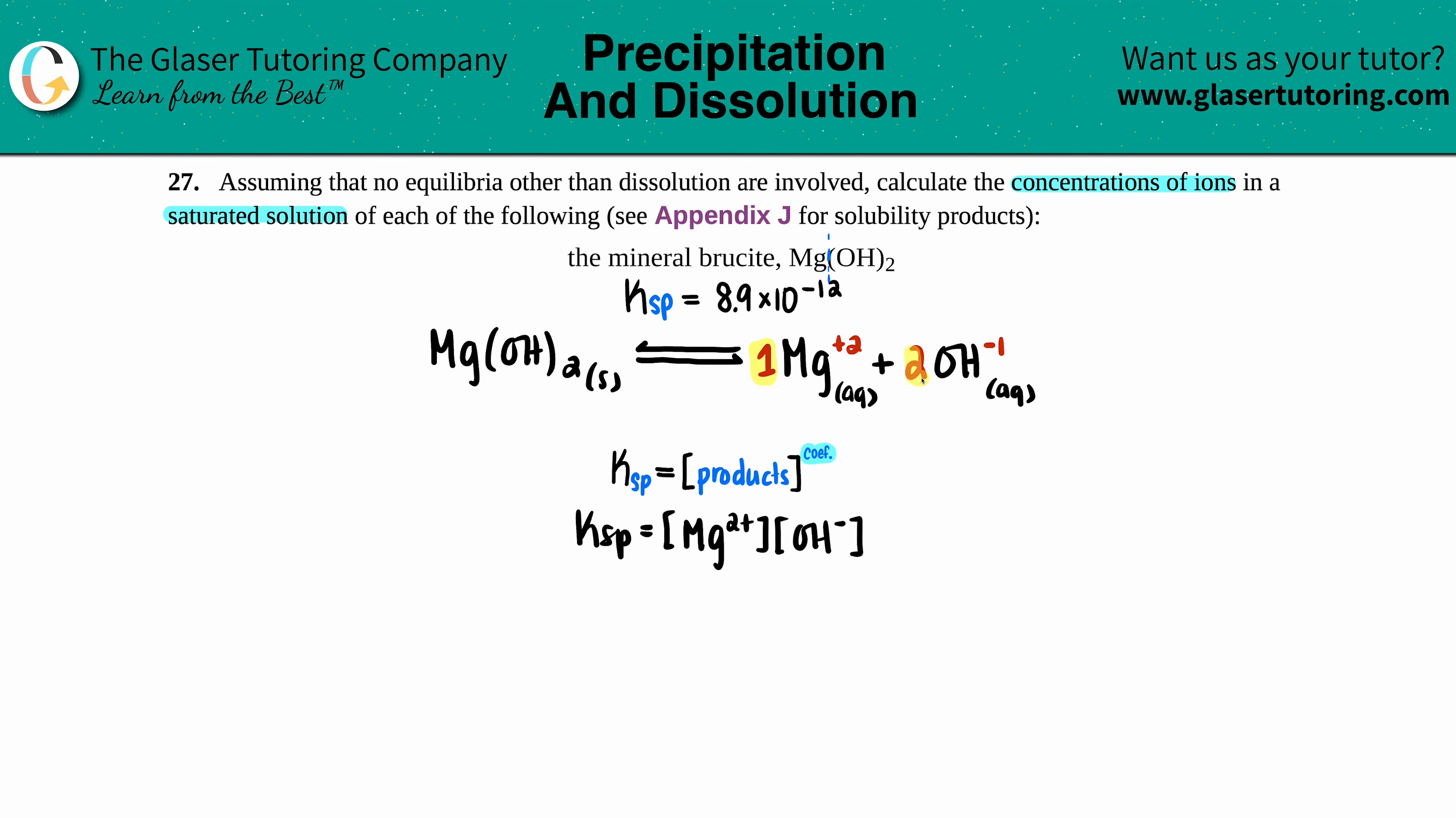Raise them to their coefficients. There was no coefficient in front of magnesium, meaning there was one of them, and there's a two for the hydroxide. So for the OH⁻, I have to square that value. The Ksp value from the back of the book was 8.9 times 10 to the negative 12th.